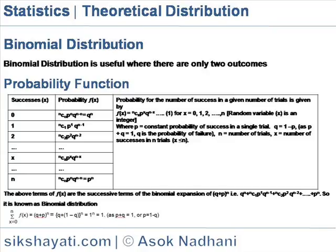The terms of f(x) are the successive terms of binomial expansion of (q+p)^n, that is q^n + nC1 p^1 q^(n-1) + nC2 p^2 q^(n-2), like that up to p^n. So, it is known as binomial distribution.